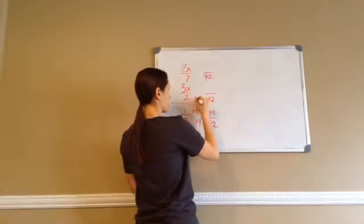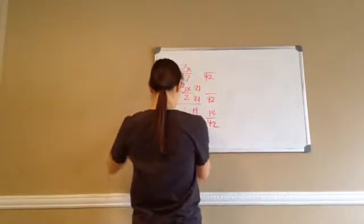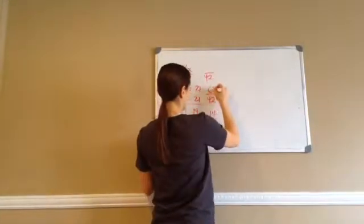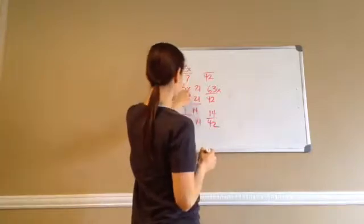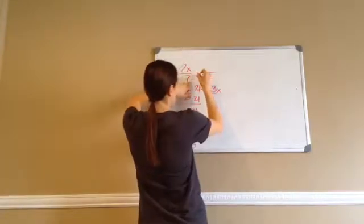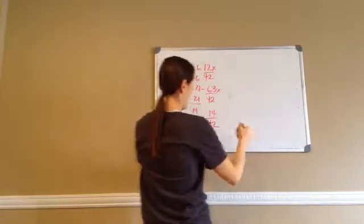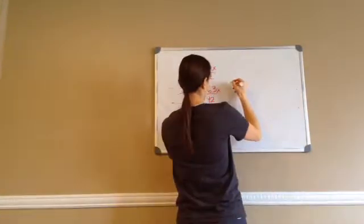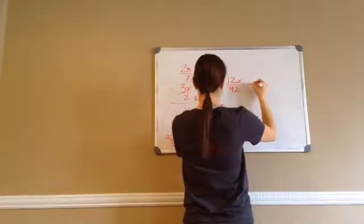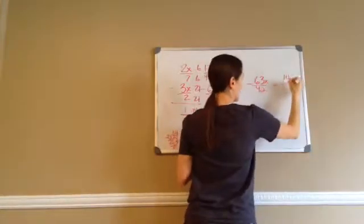From here to here I have to multiply by 21. So 21 times 3 is 63x. Make sure you show your negative right there. And 6 times 2 is 12x. Now I'm going to write it horizontally: 12x over 42 minus 63x over 42 equals 14 over 42.